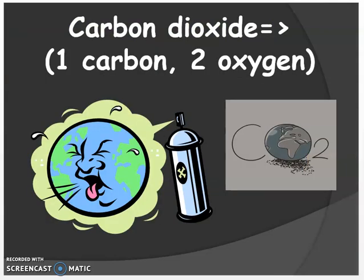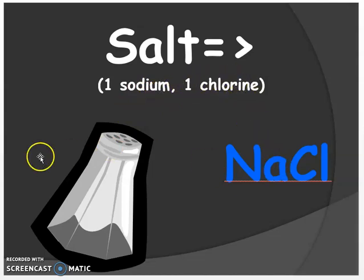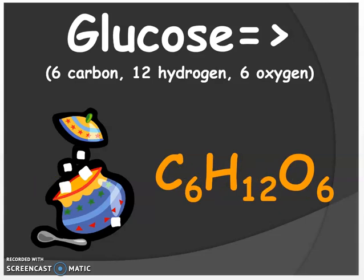Here are more examples of chemical formulas. Carbon dioxide has one carbon and two oxygens. Salt contains one sodium and one chlorine. Glucose has six carbons, twelve hydrogens, and six oxygens.